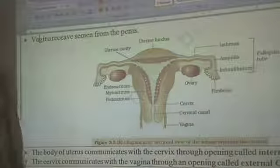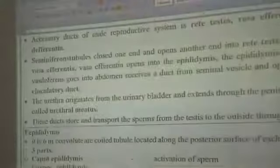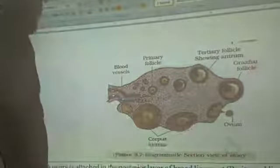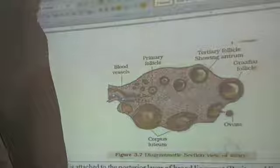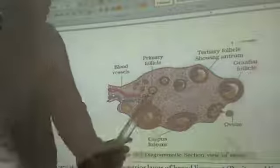If we want to see the complete structure of the ovary, we need to change the slide. The ovary is surrounded by the germinal epithelium, which is one type of simple cuboidal epithelium. Inside the germinal epithelium, the complete inner part is called the stroma of the ovary.